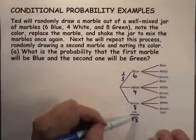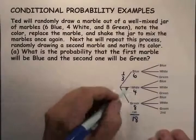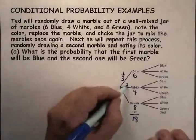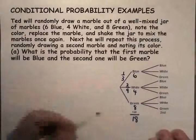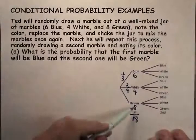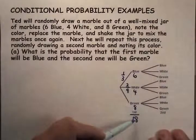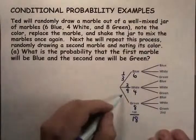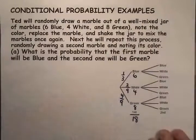You could do the same thing with the white and the green. Four out of 18 reduces to two-ninths, so the probability of getting a white is two-ninths. And the probability of getting a green — eight out of 18 — reduces to four-ninths.